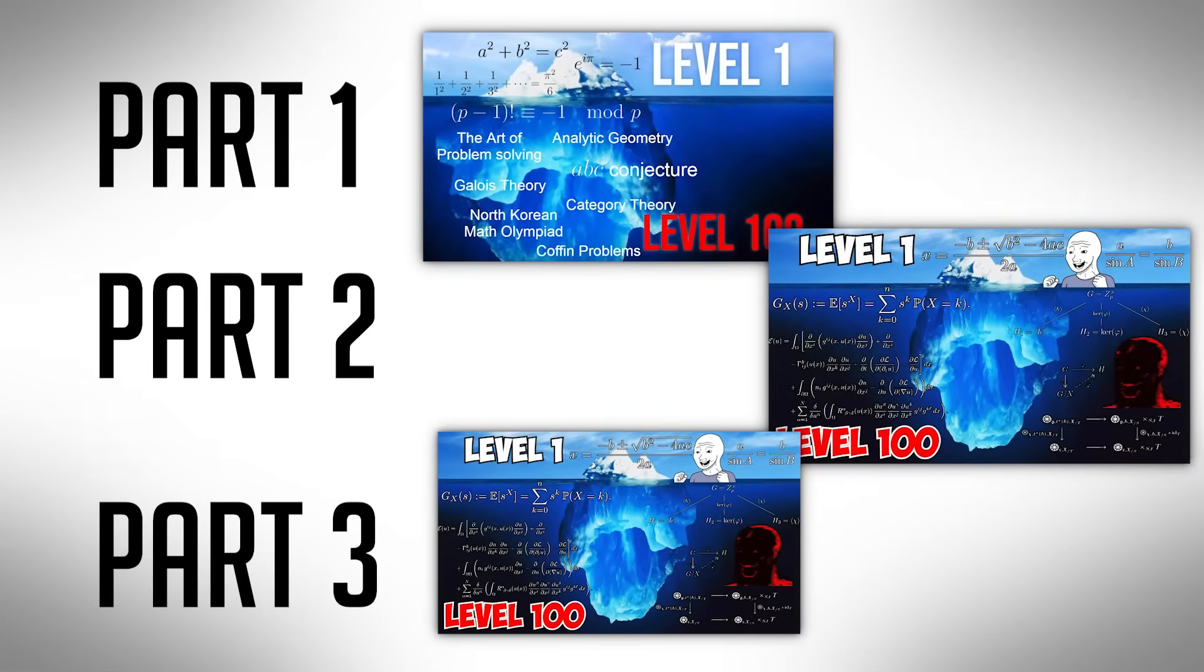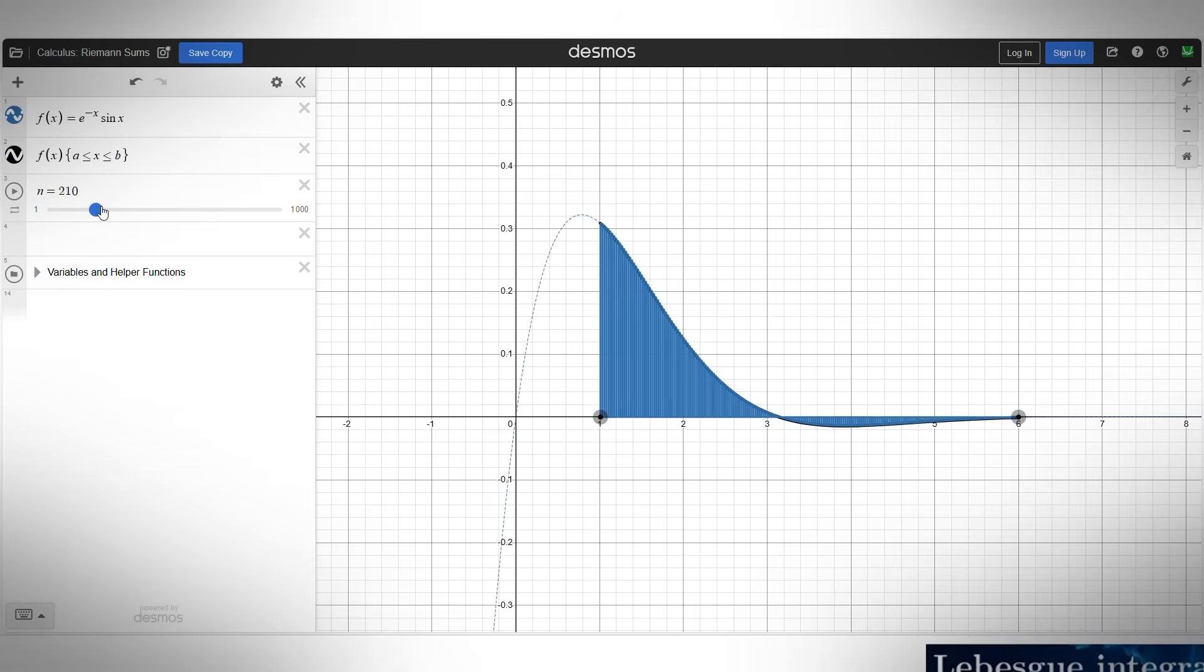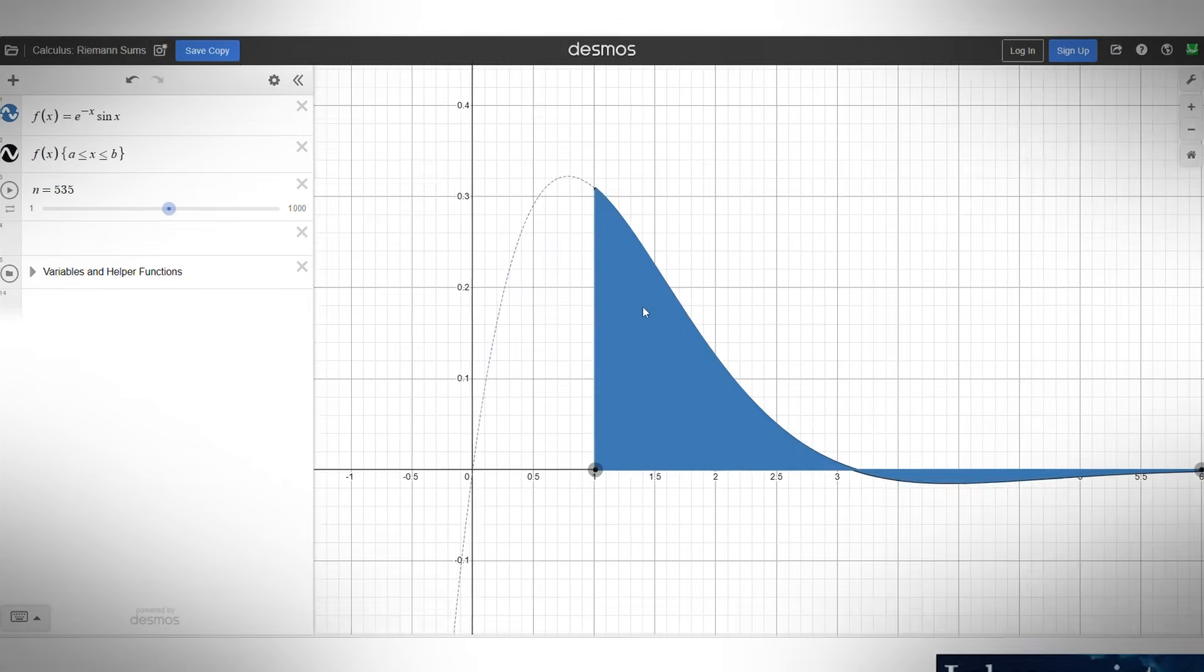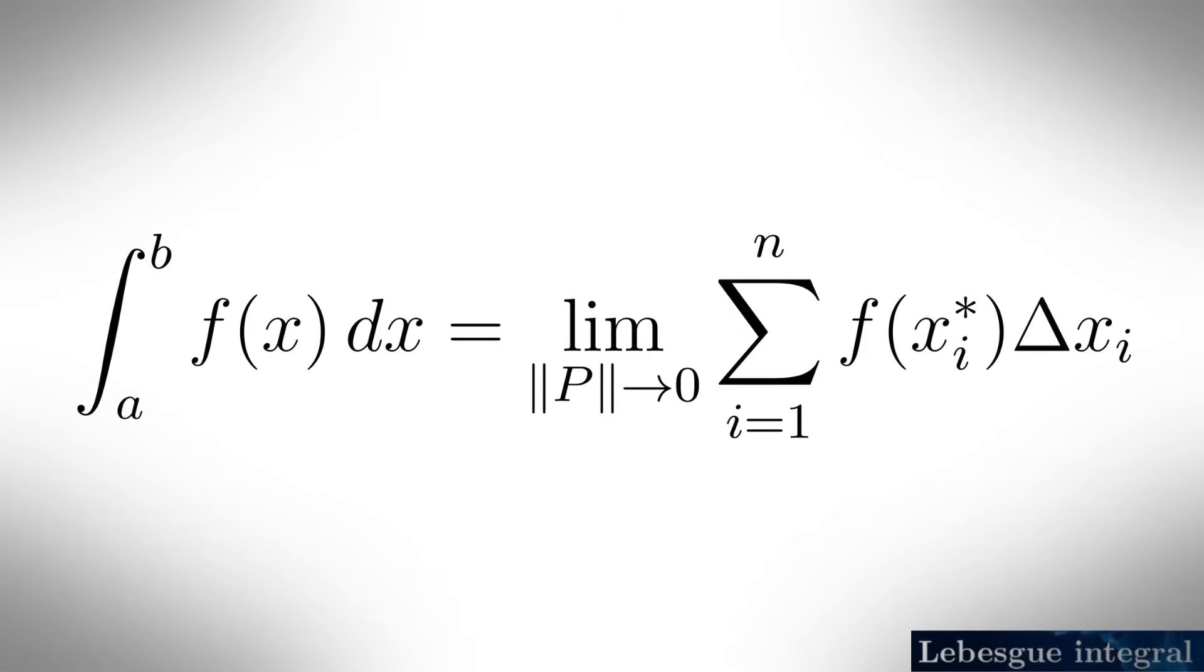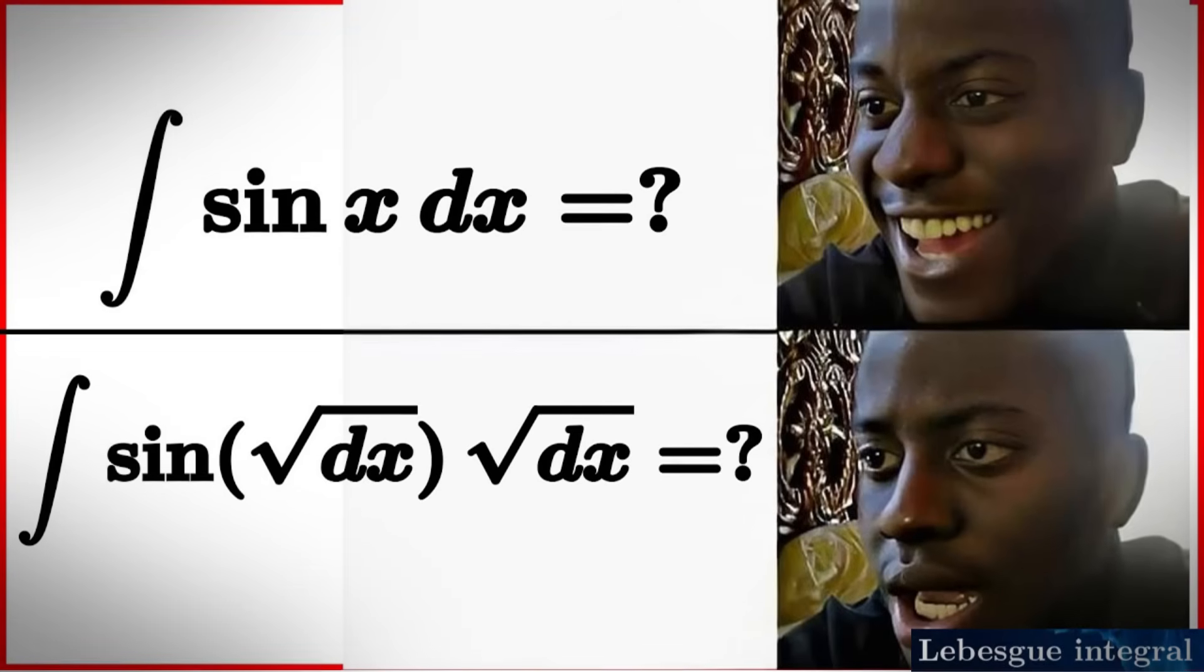Go watch part one if you haven't already. Introduction to Analysis: Lebesgue integral. In normal integration, the integral is defined by splitting the curve into extremely thin rectangles and adding the area of all those rectangles. This is called Riemann integration, but not everything is Riemann integrable.